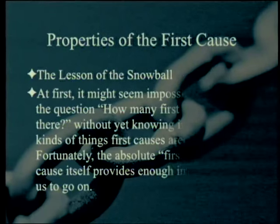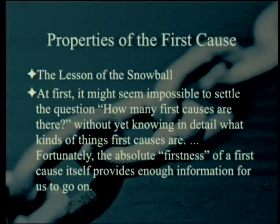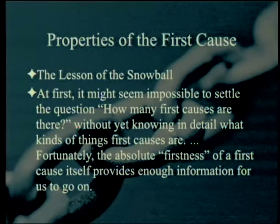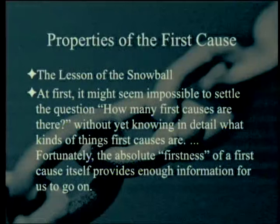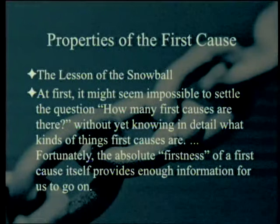The lesson of the snowball. At first, it might seem impossible to settle the question 'how many first causes are there?' without yet knowing in detail what kinds of things first causes are. His project is to establish this from what he would call common sense — almost necessary propositions. Fortunately, the absolute firstness of a first cause itself provides enough information for us to go on. We don't know what all things are in great detail, but that does not stop us from realizing there cannot be more than a single 'all.' If there were really 16 'alls,' any one of them would not really be 'all.'